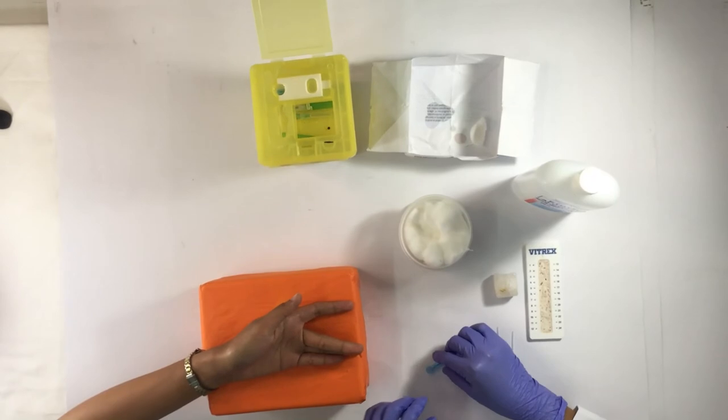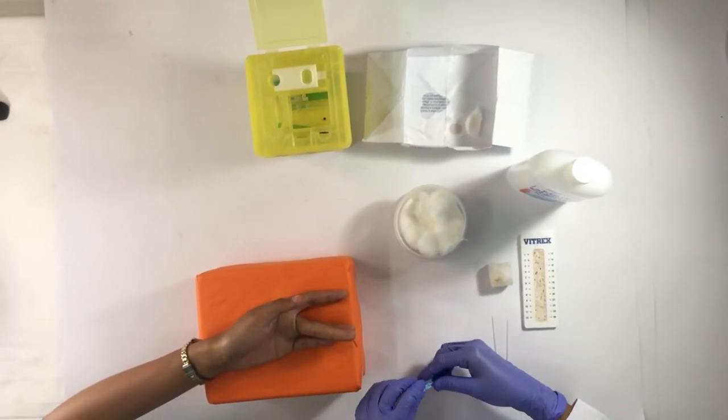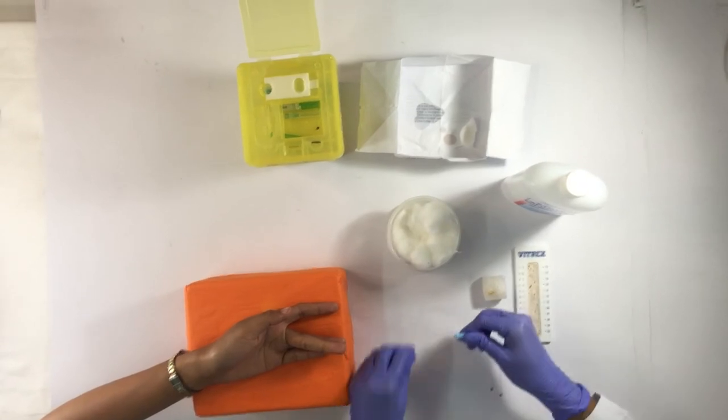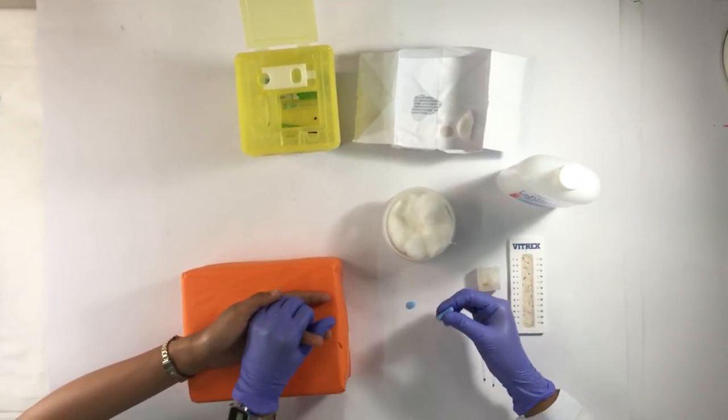While waiting, prepare the materials needed for collection. Remove the cover of the disposable lancet by twisting. This will expose the needle of the lancet.